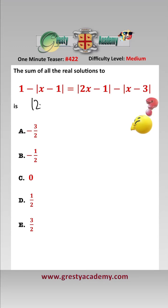To make it slightly more clear, let's rewrite this as mod 2x minus 1 add mod x minus 1 minus mod x minus 3 is equal to 1, which gives us three critical points: x is a half, x is 1, and x is 3.